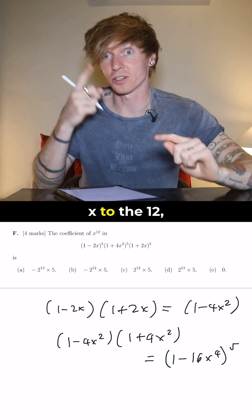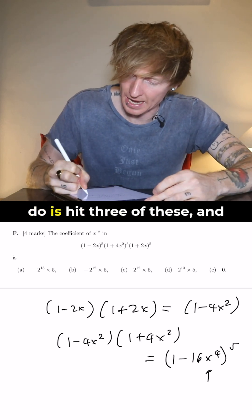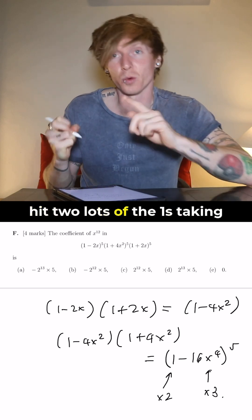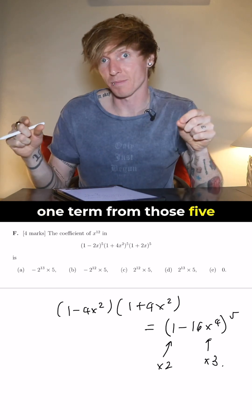So in order to get the x to the 12, what we're going to need to do is hit 3 of these, and hit two lots of the 1s, taking one term from those five brackets.